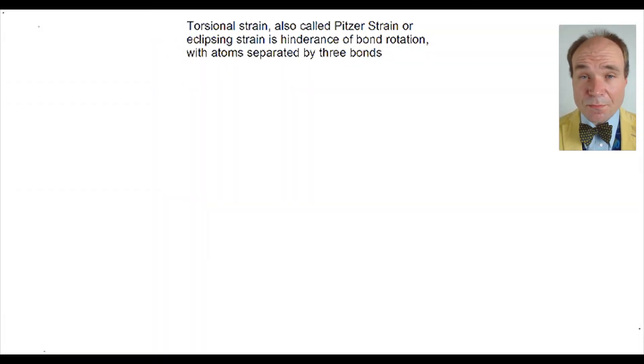Torsional strain is sometimes called Pitzer strain or eclipsing strain, and this causes the hindrance of rotation about a bond where two atoms are separated by three bonds.